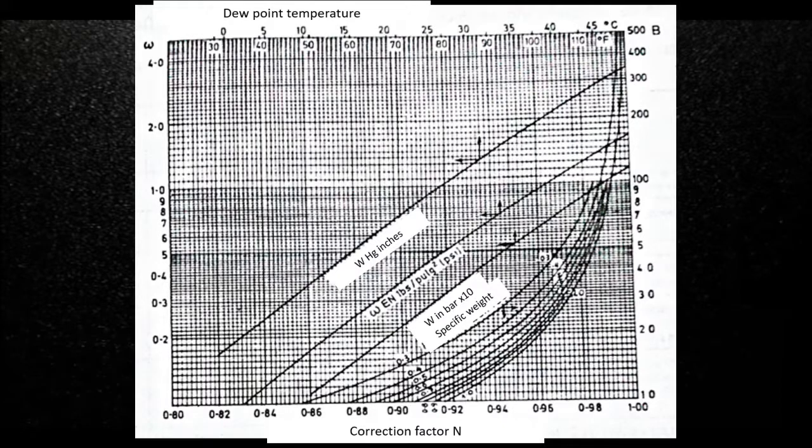To read the graph, we follow three steps. The first is that from the dew point on the upper scale, the vapor pressure W is determined by the corresponding pressure line. The second step is to get B with the formula I showed earlier. And the last step is to read the factor N on the lower scale using the specific gravity curves with B on the right vertical scale.